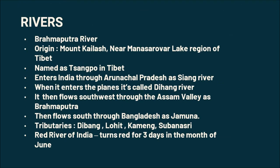Brahmaputra is the important river of Assam and is also known as the lifeline of Assam. The river has its origin in Mount Kailash, near the Manasarovar lake region of Tibet. In Tibet, it is named Tsangpo. It enters India through Arunachal Pradesh as the Siang river, and when it enters the plains, it is called the Dihang river.